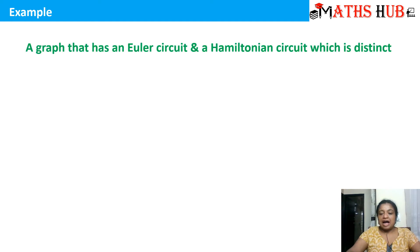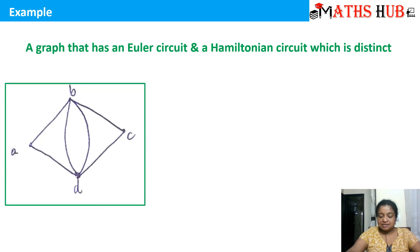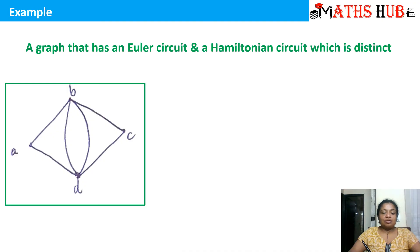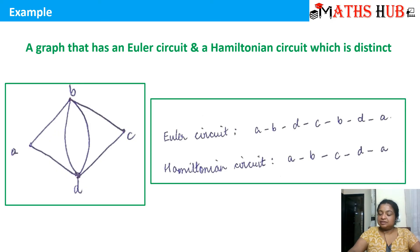Now let's see a graph which has both an Eulerian circuit and a Hamiltonian circuit, but they are distinct. For the Eulerian circuit: go A to B, back to A, then A to B again, then B to C, C to D, D to A — this covers all edges exactly once. For the Hamiltonian circuit: A to B, B to C, C to D, D to A — covering all vertices once. Both circuits are different.